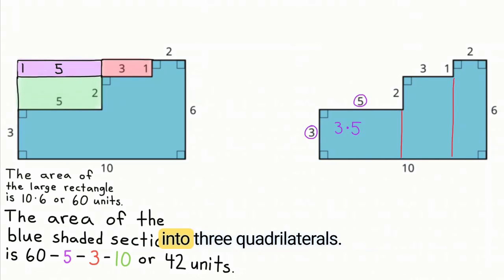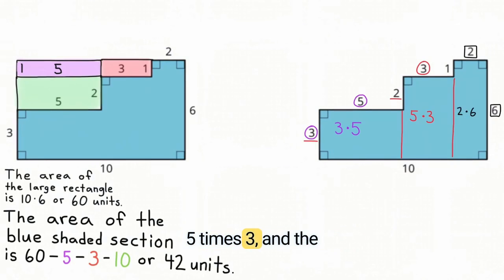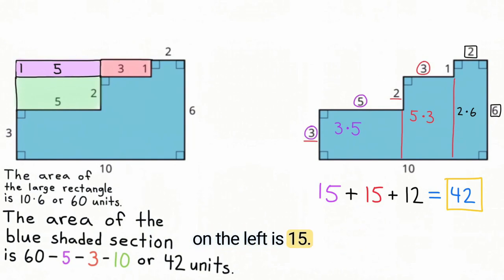Now I've broken down the shape into three quadrilaterals. The quadrilateral on the left has the dimensions of 3 times 5. The quadrilateral in the middle has dimensions of 5 times 3 and the quadrilateral on the right hand side has the dimensions of 2 times 6. The area of the quadrilateral on the left is 15. The area of the quadrilateral in the middle is also 15 and the area of the quadrilateral on the right is 12. 15 plus 15 plus 12 equals 42. Just like the shaded blue area in the shape on the left, the area of this shape is also 42.